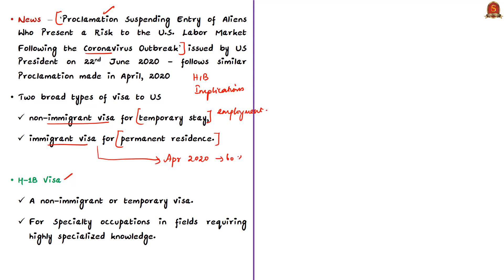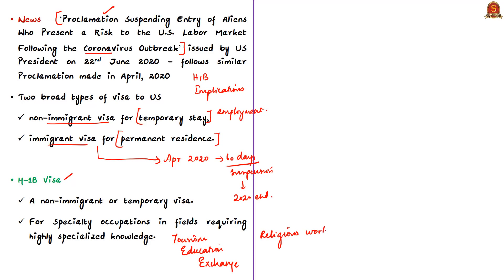The immigrant visa suspension was extended to the end of this year. Today's discussion is with respect to the non-immigrant visa. For different purposes, a foreigner may temporarily go to the USA — for tourism and vacation, for education, as exchange visitors in teaching and learning, as seasonal workers, for religious work, and various other reasons. These purposes correspond to different non-immigrant visa categories, and one such category is the H-1B visa.